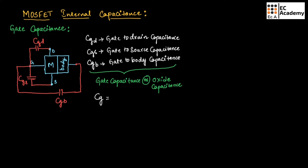Gate capacitance will be directly proportional to the width and length of the device. So we can write CG is equal to COX into WL, where W and L specify the width and length of the device, and COX is oxide capacitance.